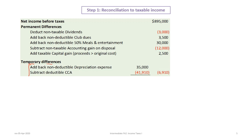This company showed $35,000 in depreciation expense, which is not deductible for tax purposes. What is deductible is the Capital Cost Allowance (CCA). The company's CCA claim is $41,910. When we add back the depreciation and subtract the CCA, we end up with a net $6,910 adjustment.